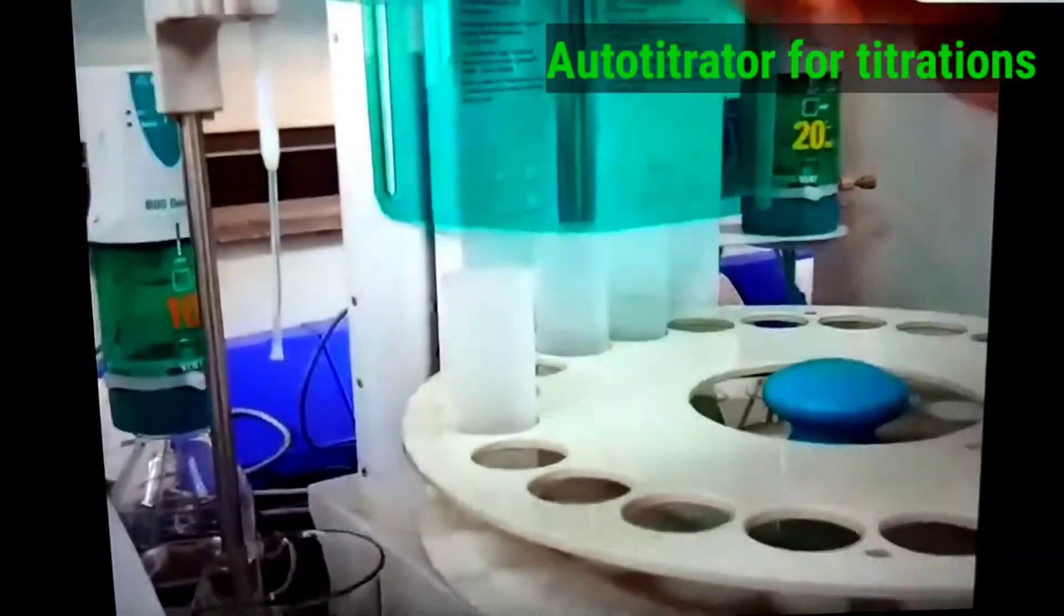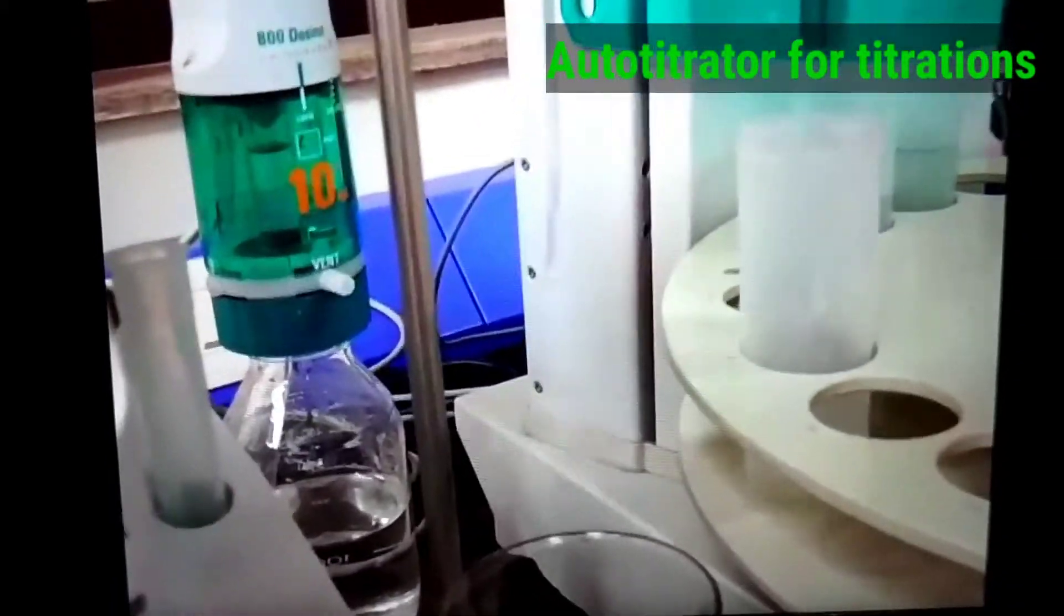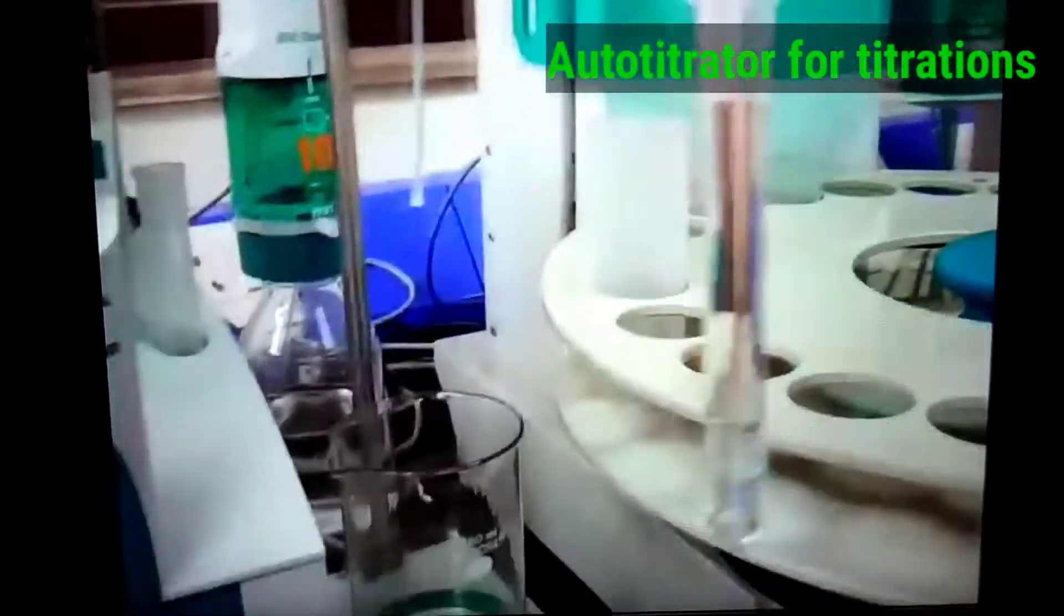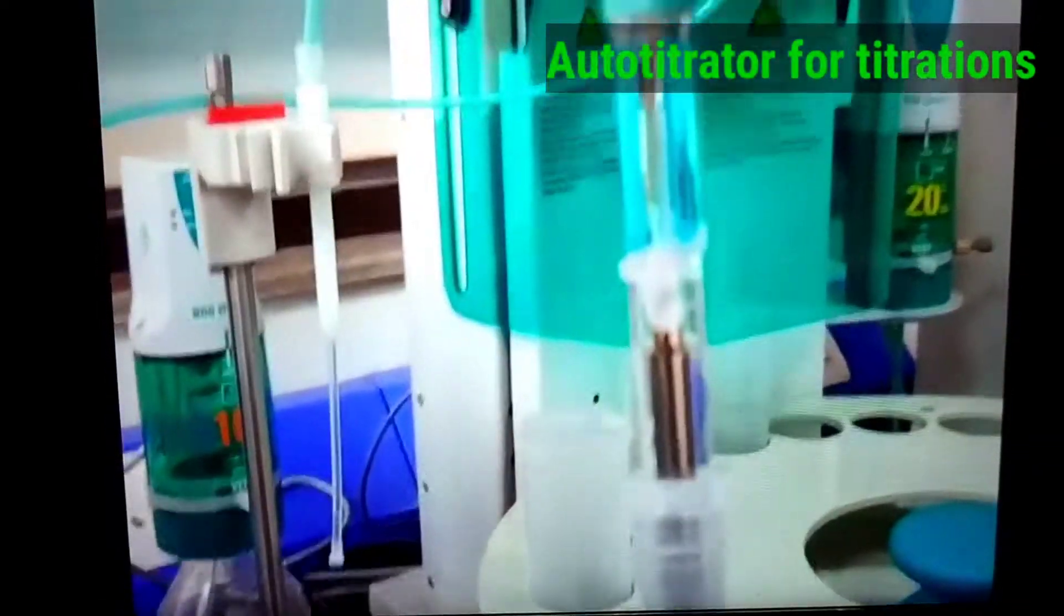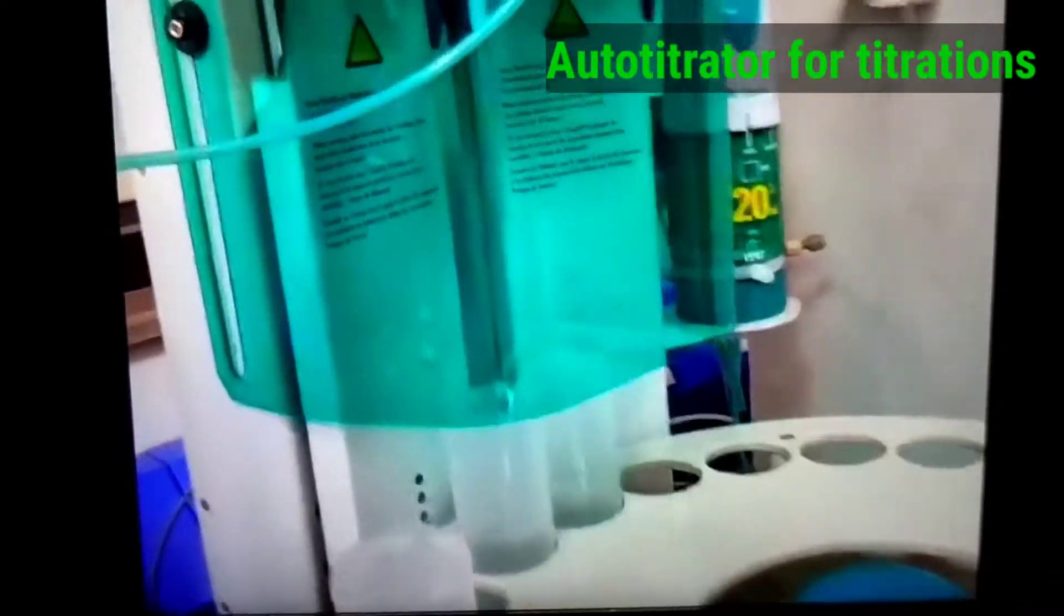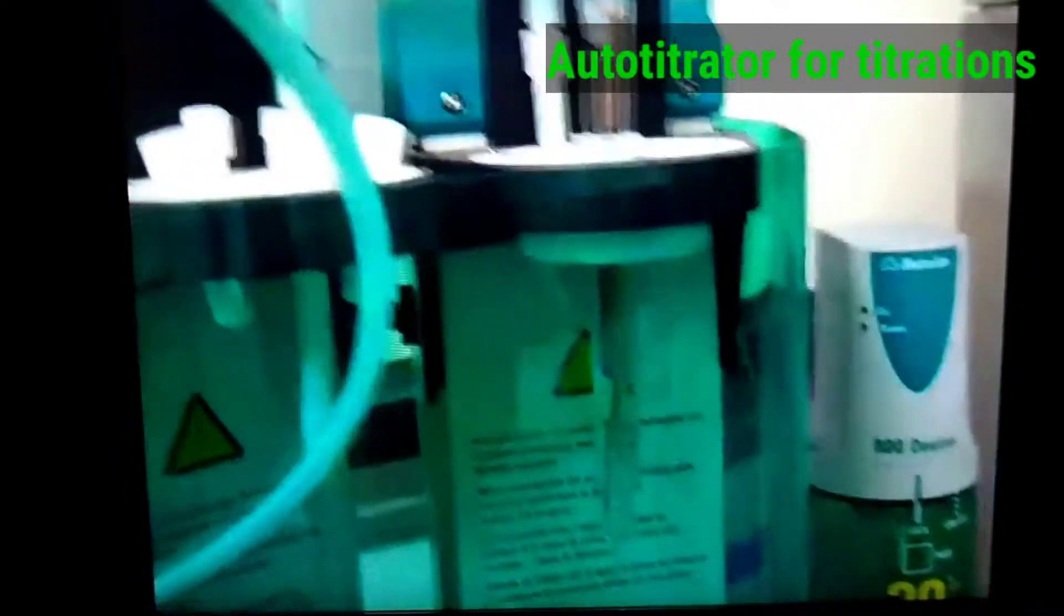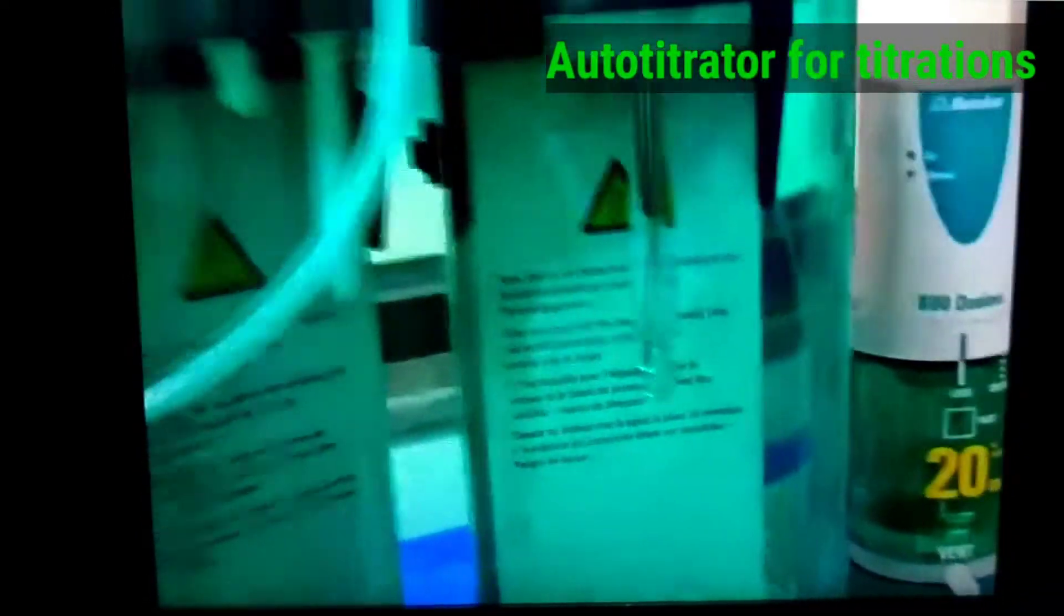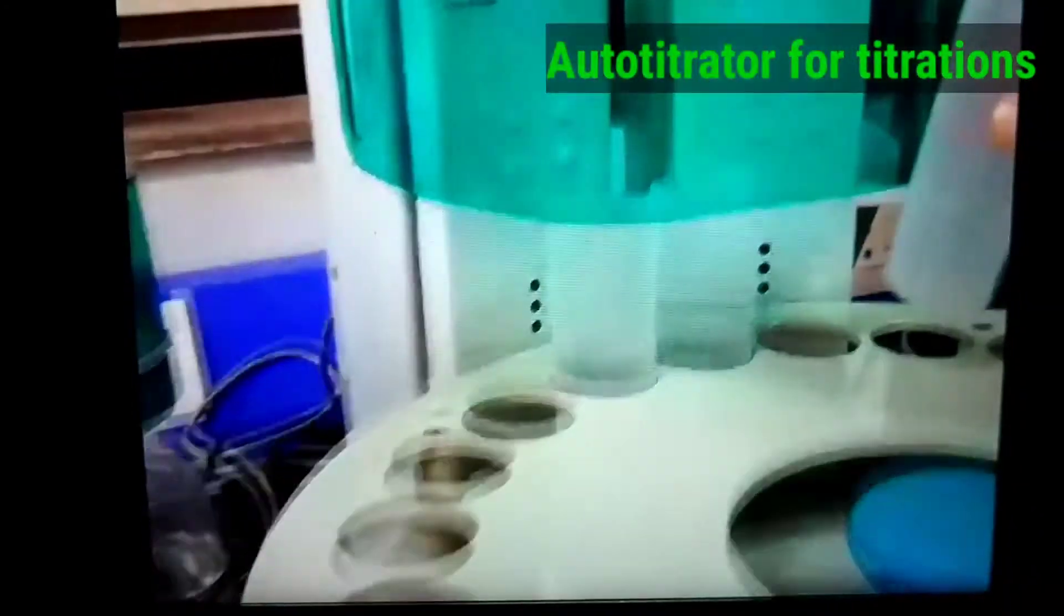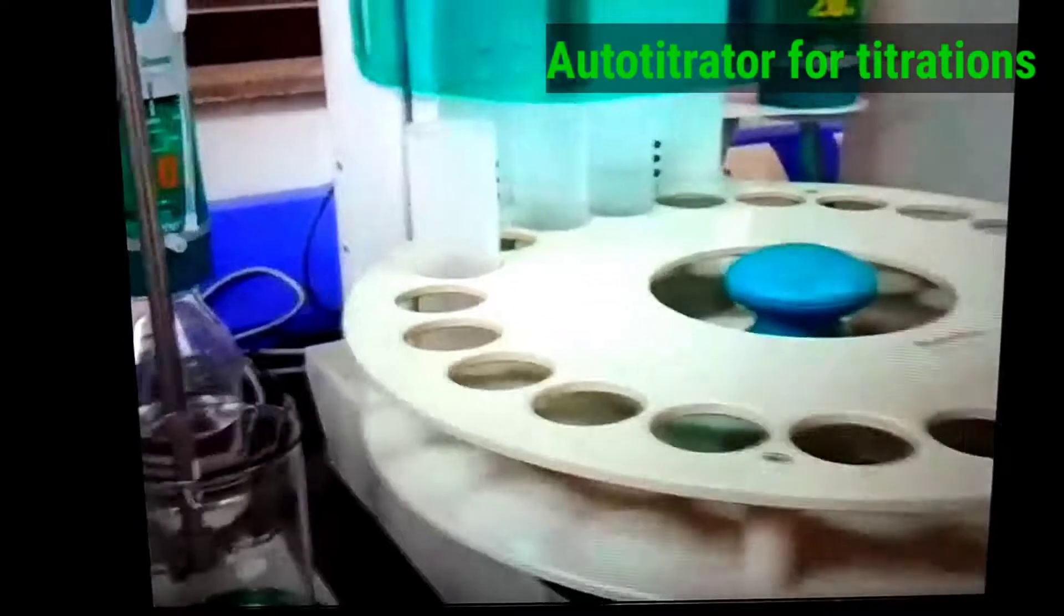Then we have a pH electrode like this. Just focus it. So you will put this pH electrode here like this, and you will put the sample downward like this in this one.